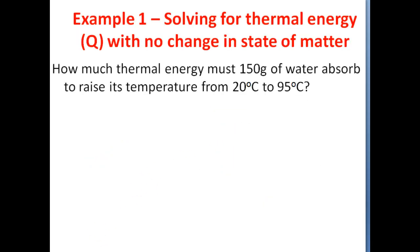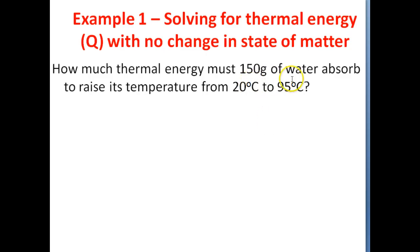In example one we're going to solve for Q when there is no change in state of matter. It says: how much thermal energy must 150 grams of water absorb to raise its temperature from 20 degrees Celsius to 90 degrees Celsius? So you've got 150 grams of water, and this water is going to absorb some energy, so its temperature is going to change from 20 degrees Celsius to 95 degrees Celsius. We want to figure out how much thermal energy, or how much Q, this water needs to absorb.